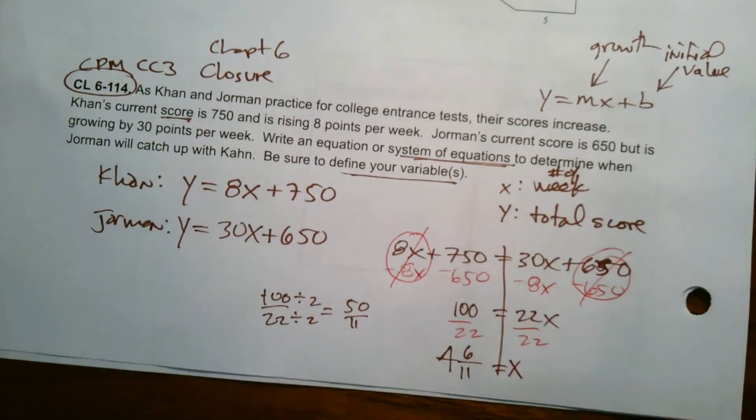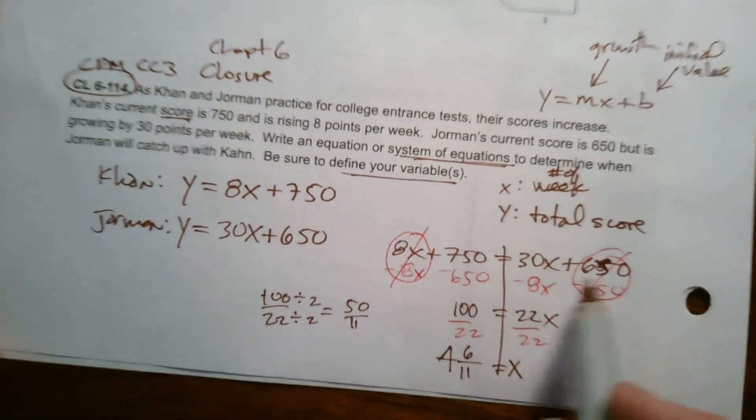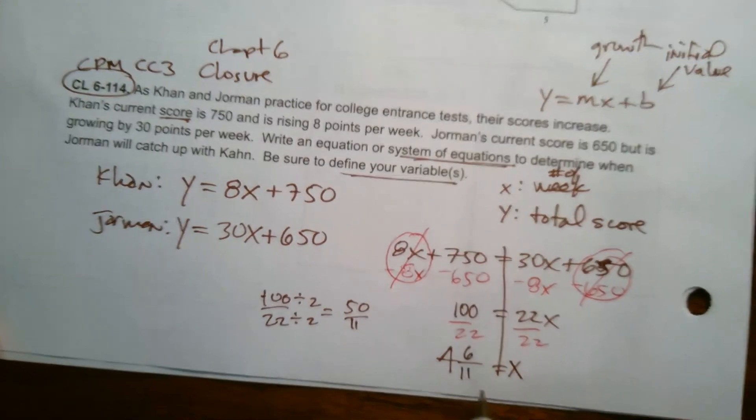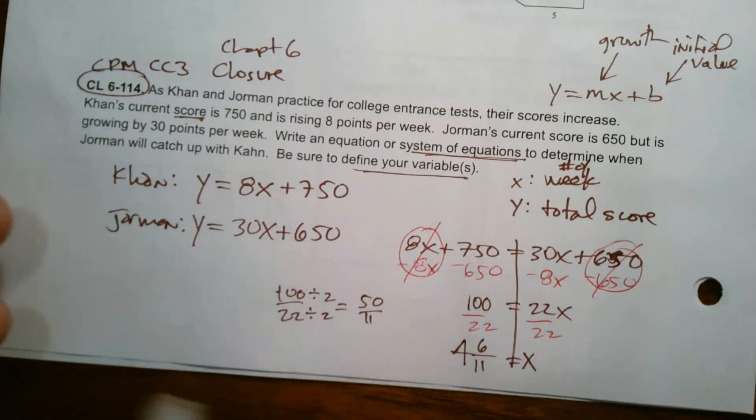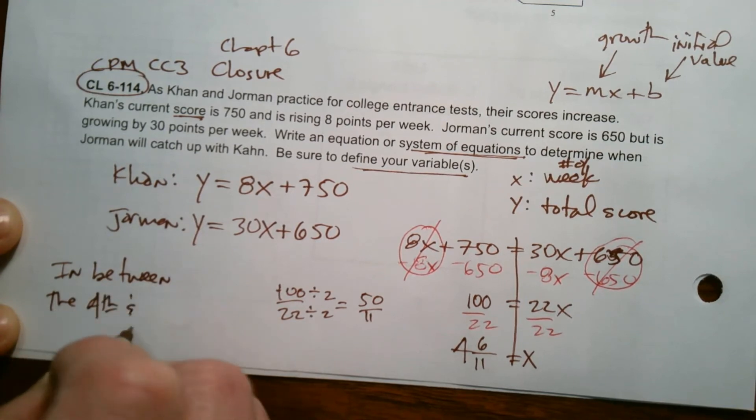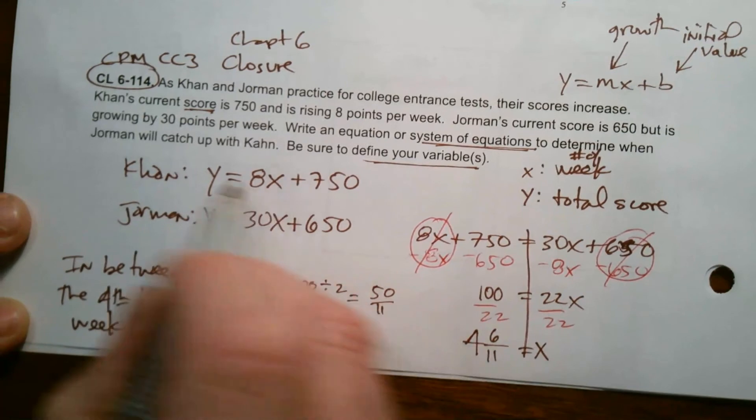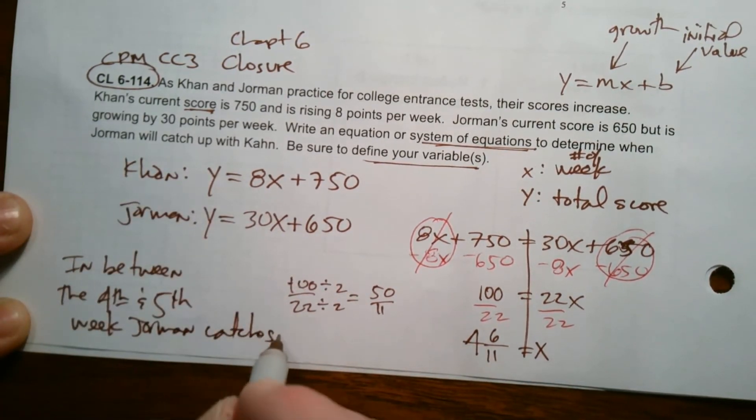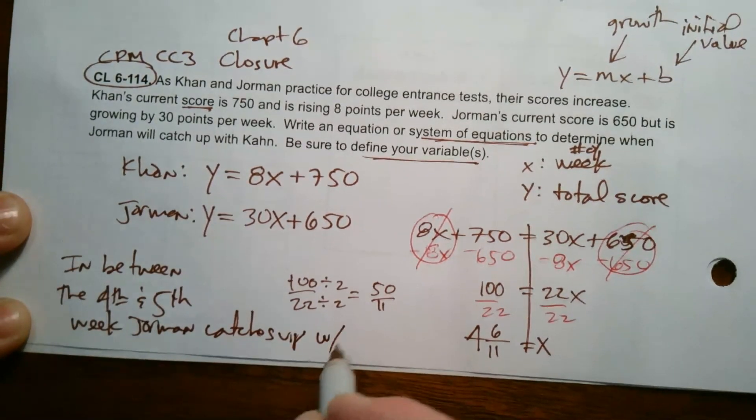So it wants me to come up with what week will their scores, will he catch up. So it looks like in between the fourth and fifth week. If X is number of weeks, we would say in between the fourth and fifth week, Jorman catches up with Khan.